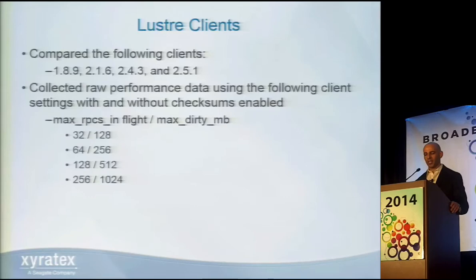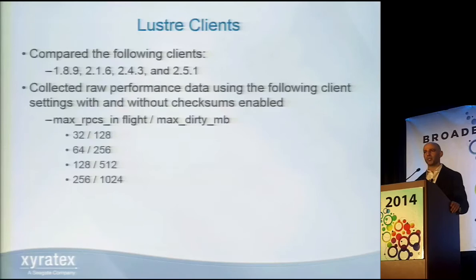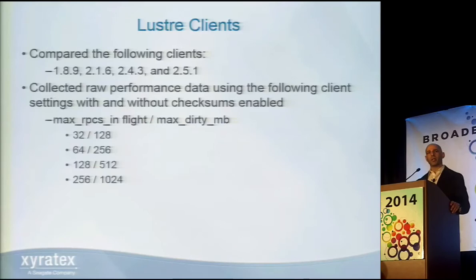The methodology was that we enabled and disabled checksums. Each time we enabled and disabled checksums, we ran through the same iterations of client tuning parameters: max RPCs in flight and max dirty MBs. I kept to a one-to-four ratio of max RPCs in flight to max dirty MBs — starting with 32 max RPCs in flight and 128 max dirty MBs, and so on. Graphs show checksums-disabled results; tabular results show the impact when checksums were enabled.